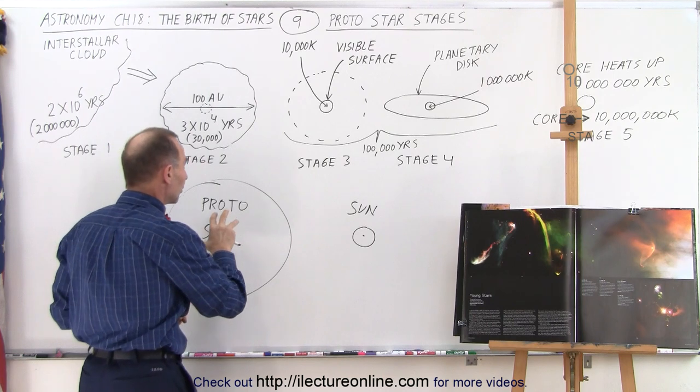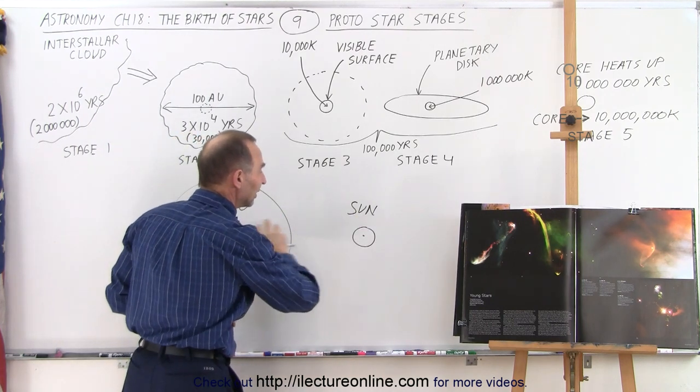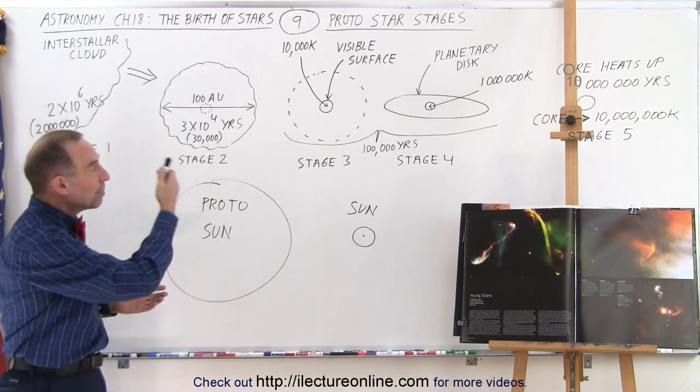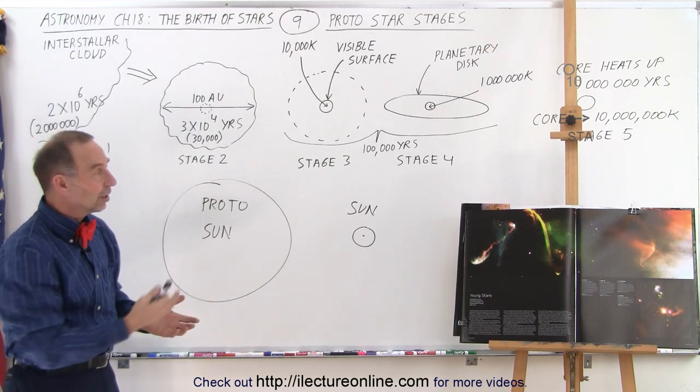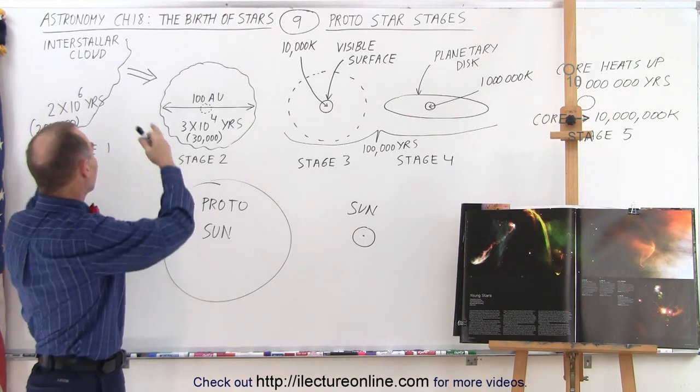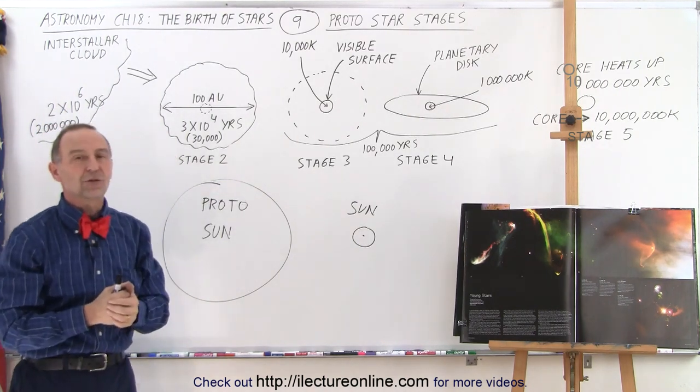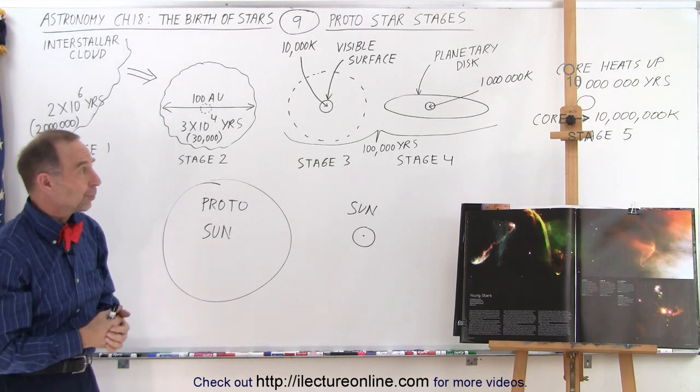The stage to go from the proto-sun into the real sun takes about 10 million years, and those are the five stages that the emerging star like the sun goes through to become from something that was a molecular cloud into what we have, a real star. And that is how it works.